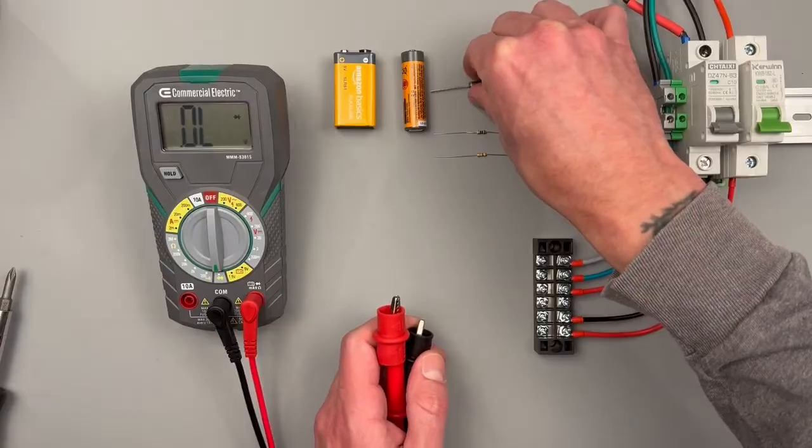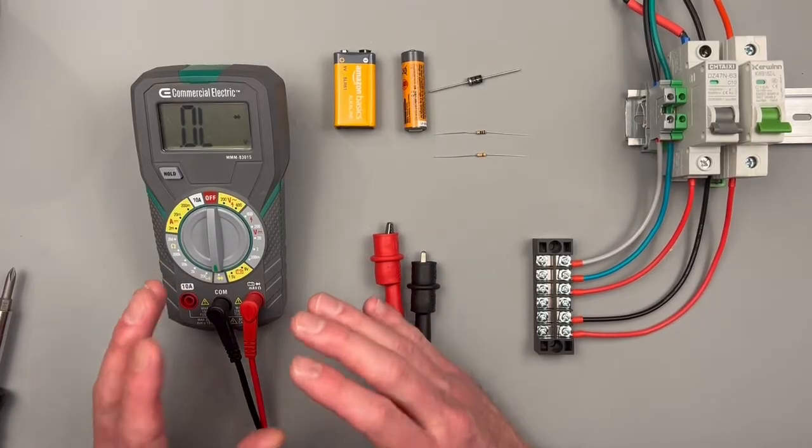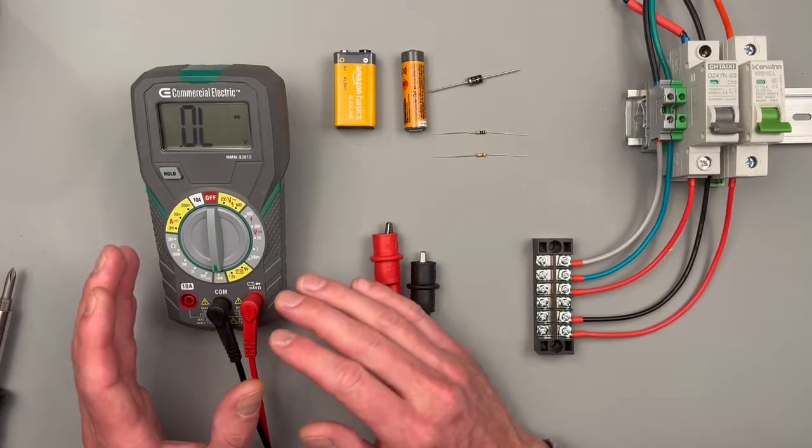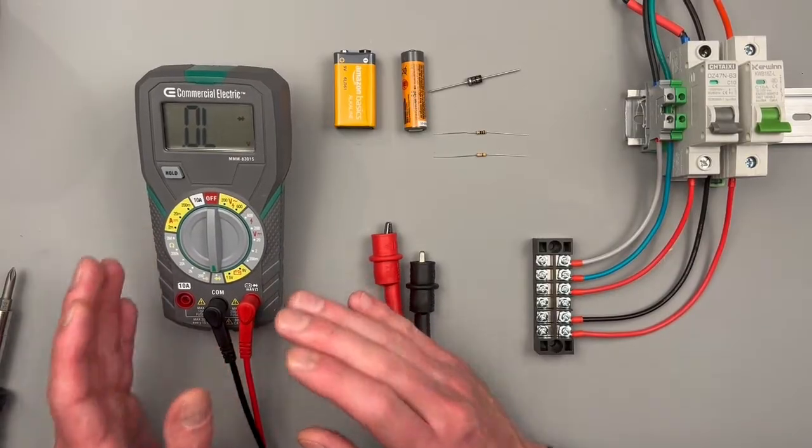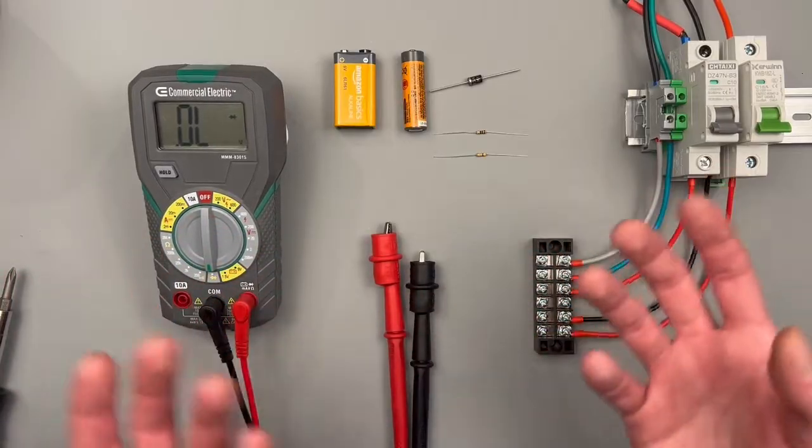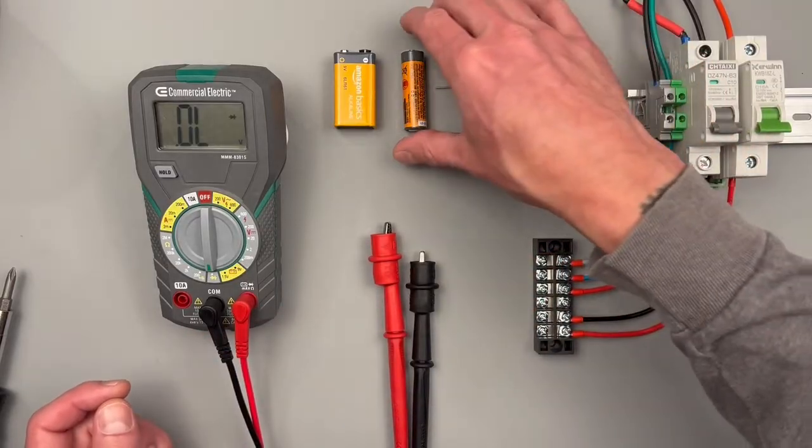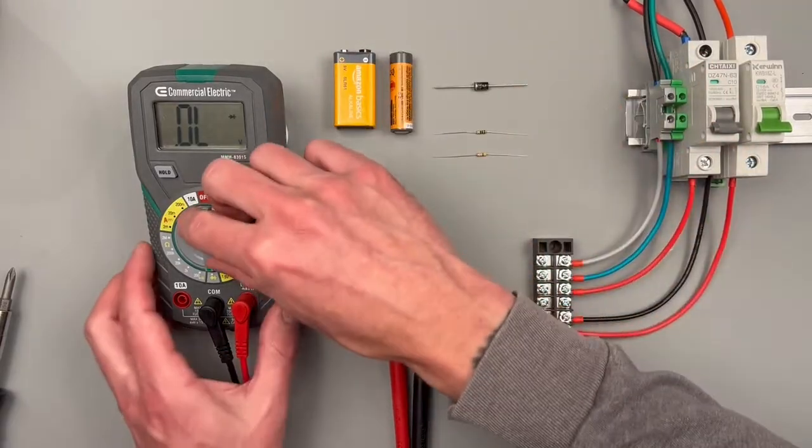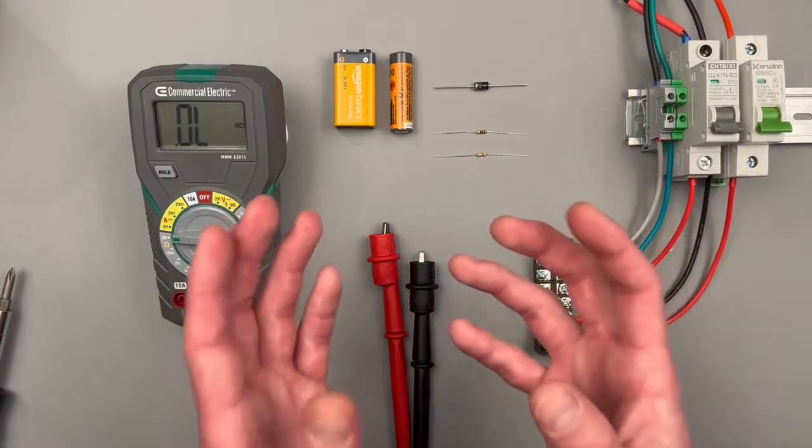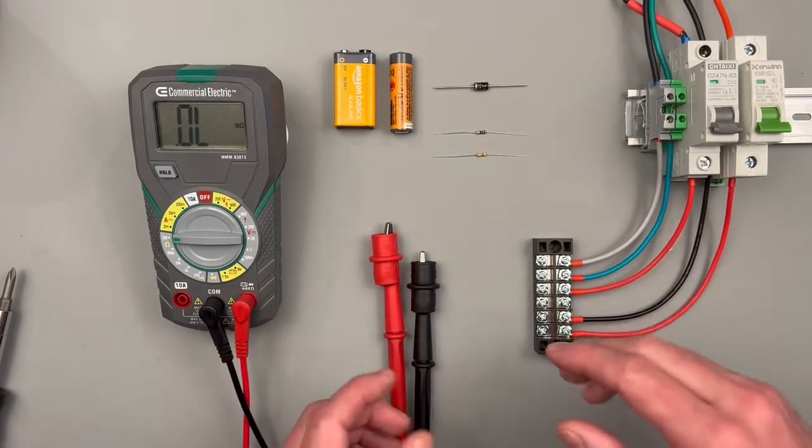Next we're going to move on to resistance. And again, like our other settings, because this is a manual selecting meter, we have to be careful of what we select when we're trying to make a measurement. Because if we make a measurement out of range, it's going to show that it's open or not valid, and that can really be confusing when we're trying to do our troubleshooting. We're going to start at the 2M setting on the meter, all the way up here. That's for 2 mega ohms or think of it as 2 million ohms.